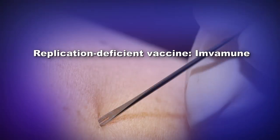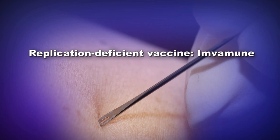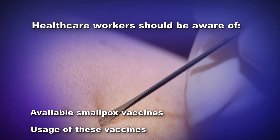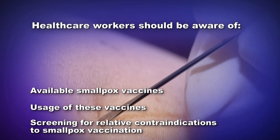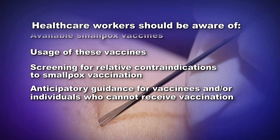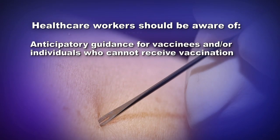The replication-deficient vaccine Imvamune may be made available for use in individuals with certain medical conditions and/or with relative contraindications, depending on their risk for smallpox infection. Thus, healthcare providers and vaccine administrators should be aware of the available smallpox vaccines, usage of these vaccines, screening for relative contraindications to smallpox vaccination, and anticipatory guidance for vaccinees and/or individuals that cannot receive vaccination.